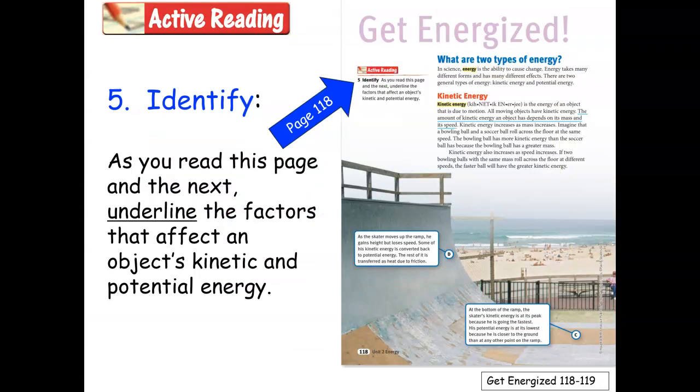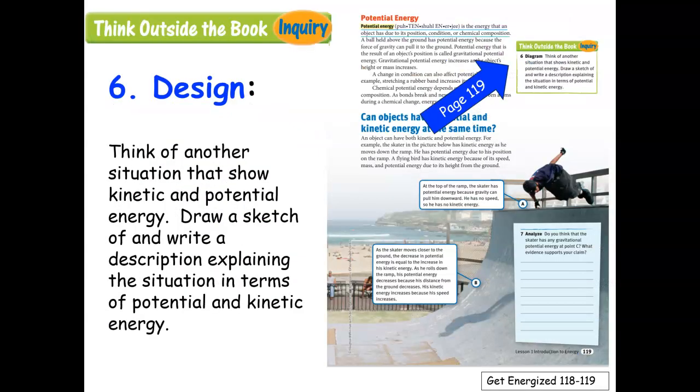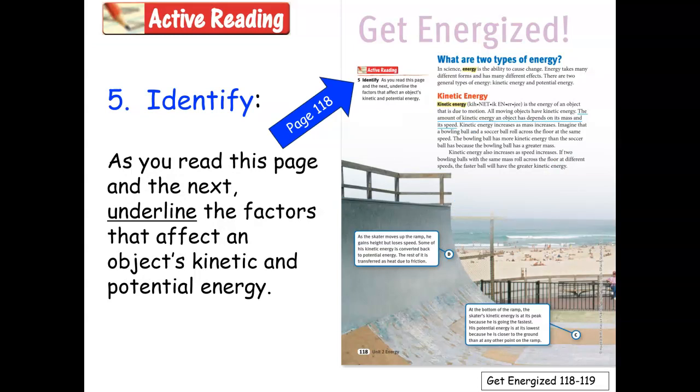Here we are, Question number 5. Question 5 is an active reading question, and they ask you to underline the factors that affect an object's kinetic and potential energy. So you have something to underline on this page and something to underline on the next page.